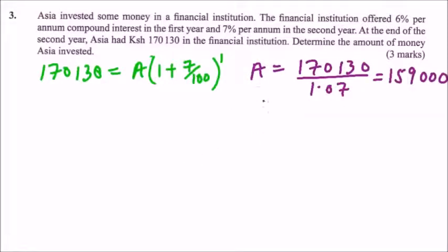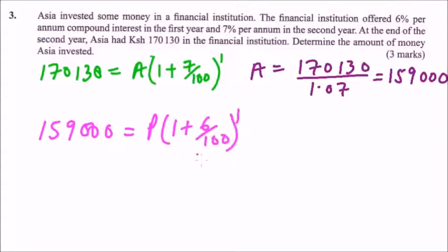So this is the amount he got in the second year. That means in the first year, the amount was 159,000 is equals to the principal, the amount of money he had invested, 1 plus 6 per annum, to power 1.